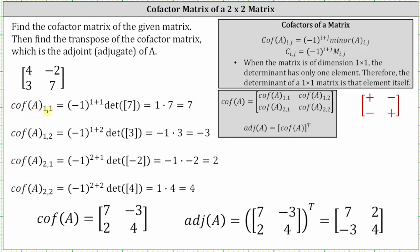Cofactor A sub one comma one is equal to negative one raised to the power of one plus one, times the determinant of the matrix formed by eliminating row one and column one of the original matrix. So if we eliminate row one and column one, we have a one by one matrix with an entry of seven. Simplifying, we have the square of negative one, which is positive one. The determinant of any one by one matrix is equal to the entry itself, giving us seven. One times seven is seven.